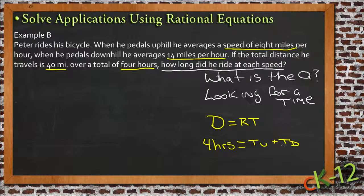Now we need to find another way to write time uphill and time downhill. If we use our formula and solve it for time, then distance equals rate times time becomes time equals distance divided by rate. Then we can write each of our two situations solved for time.